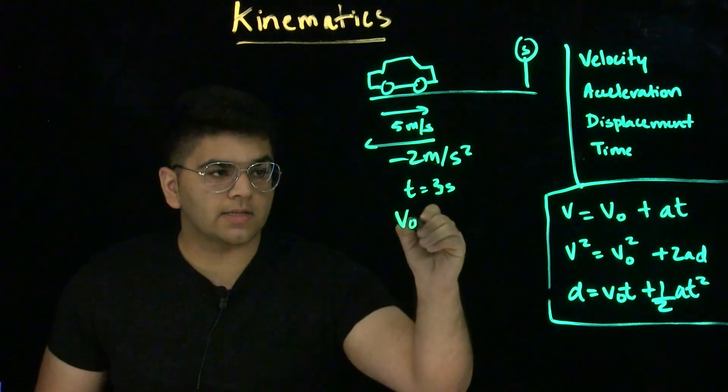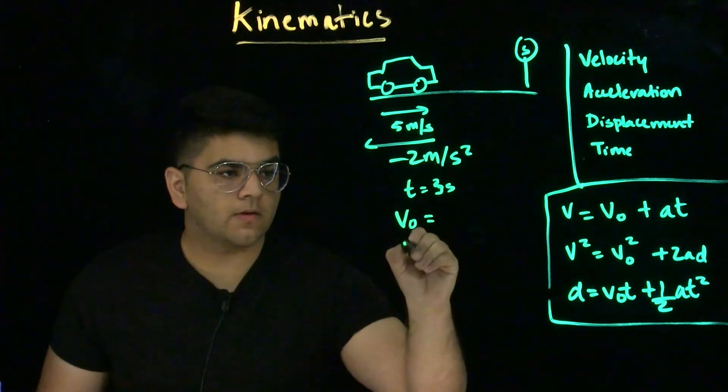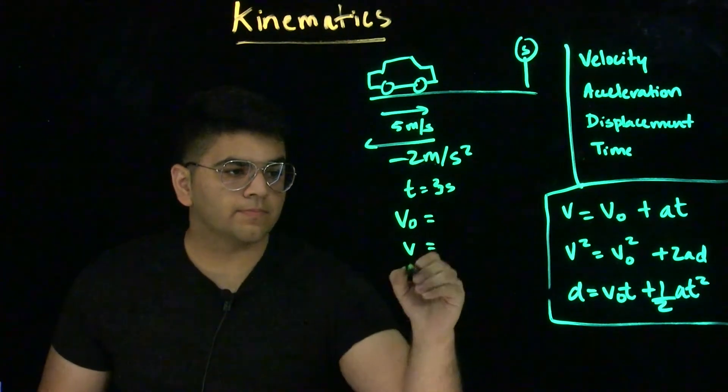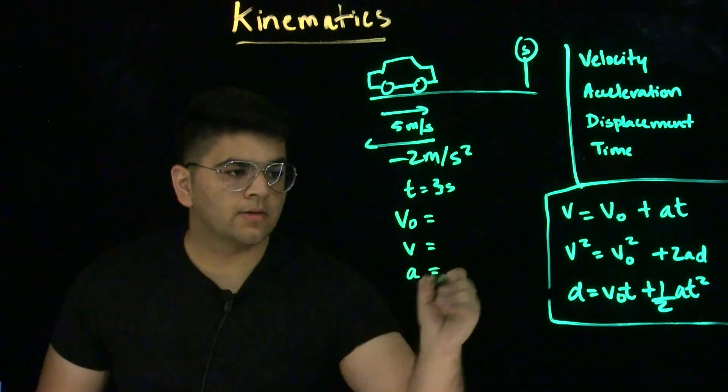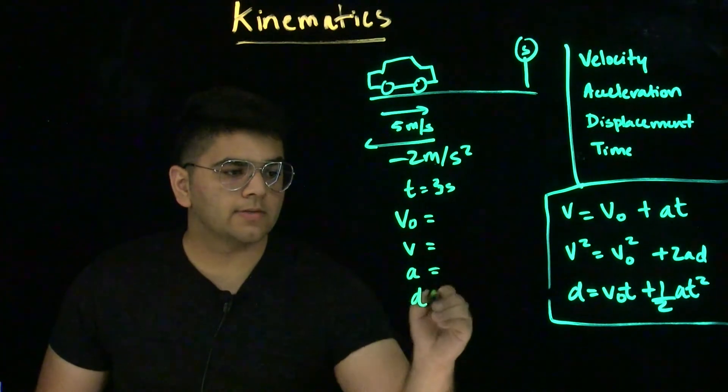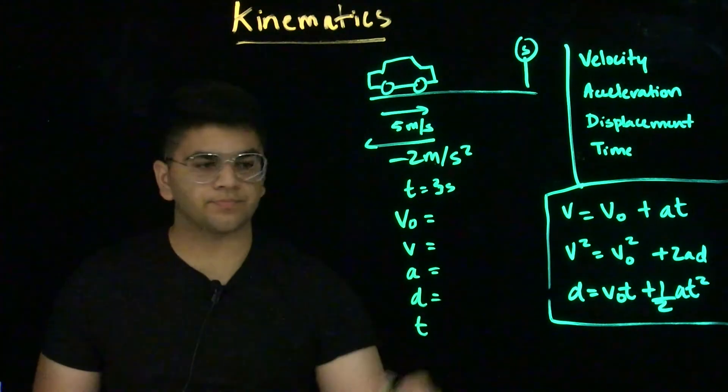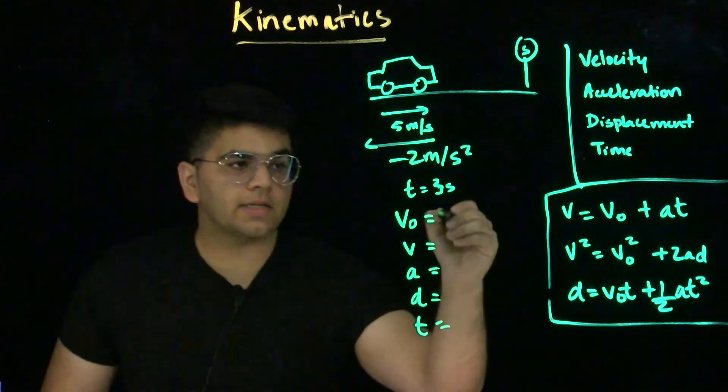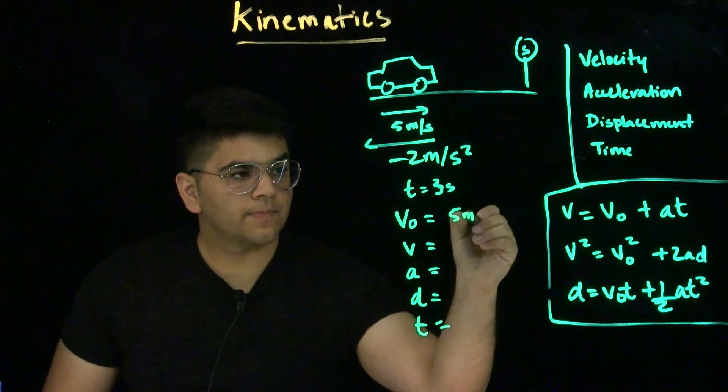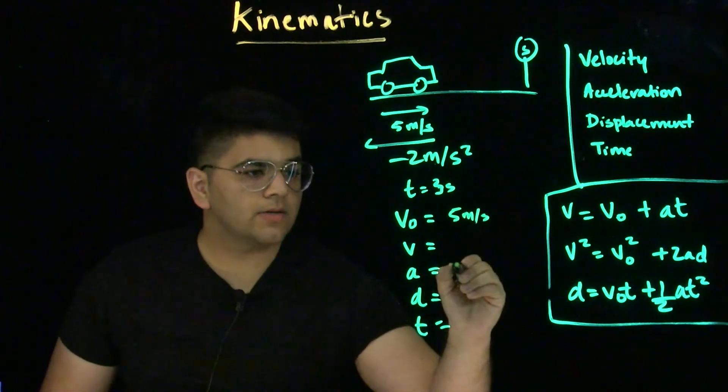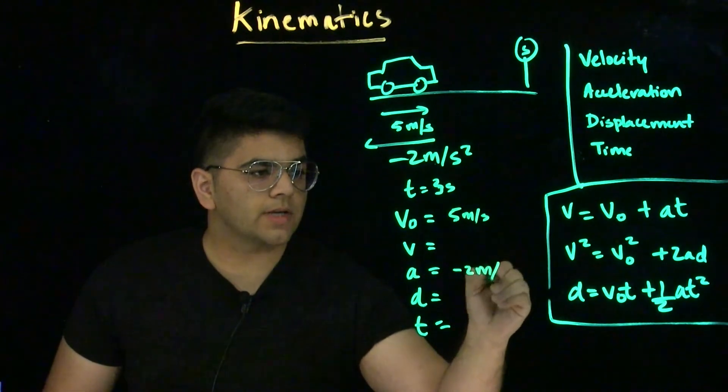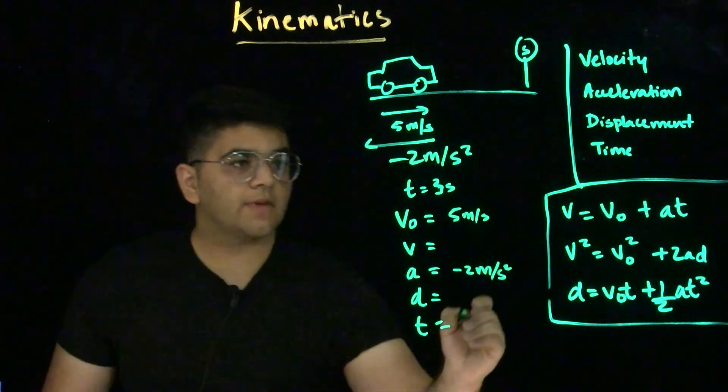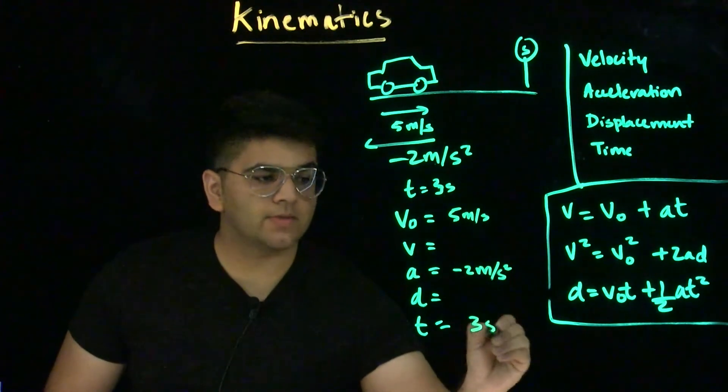We consider the initial velocity v₀, final velocity v, acceleration, displacement, and time. We know the initial velocity is 5 meters per second. The acceleration we know is negative 2 meters per second squared. Finally, the time it takes for the car to stop is 3 seconds.